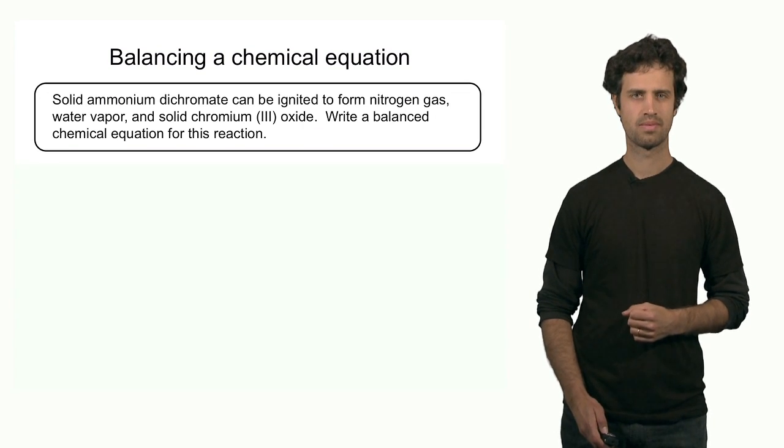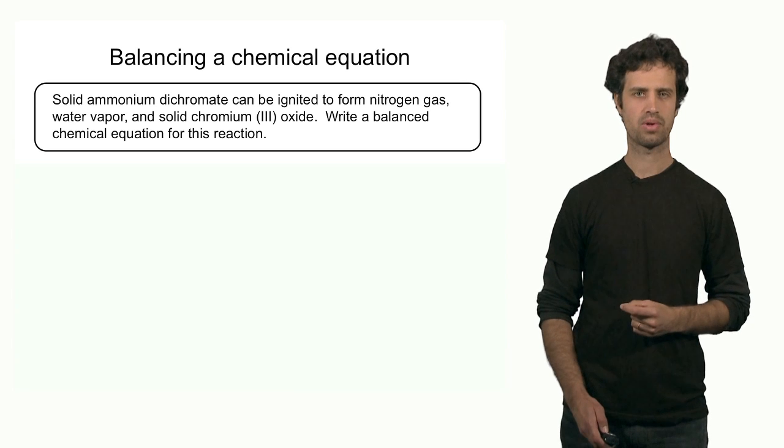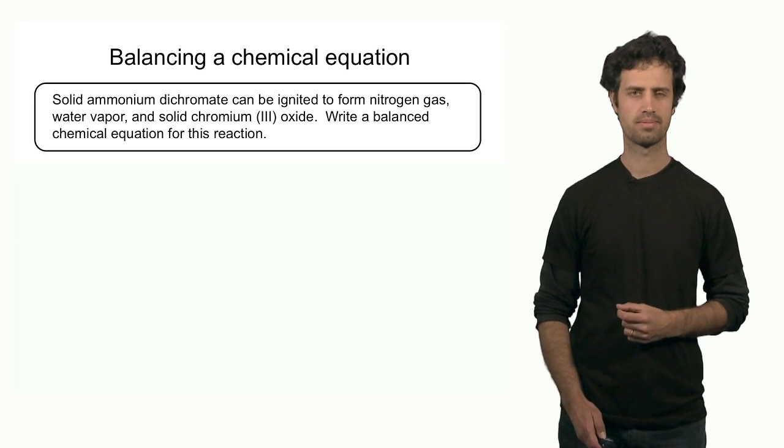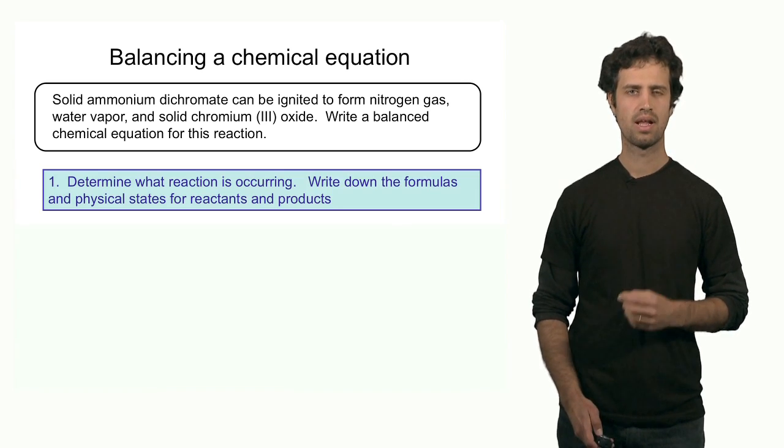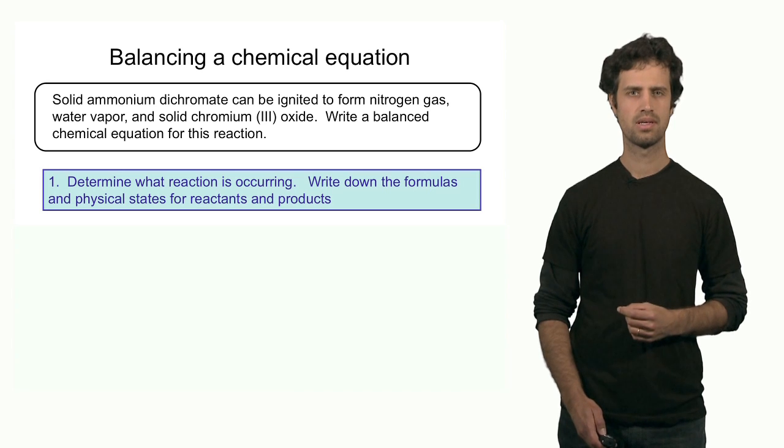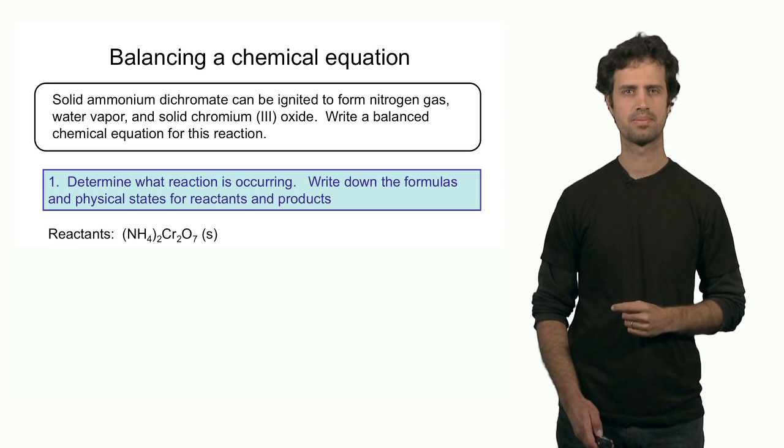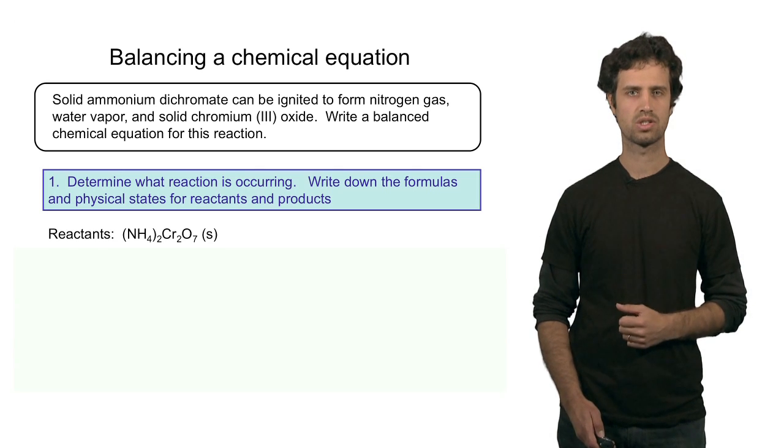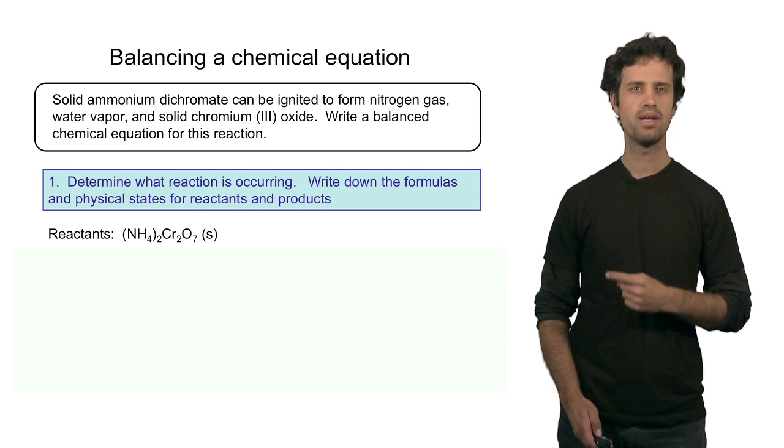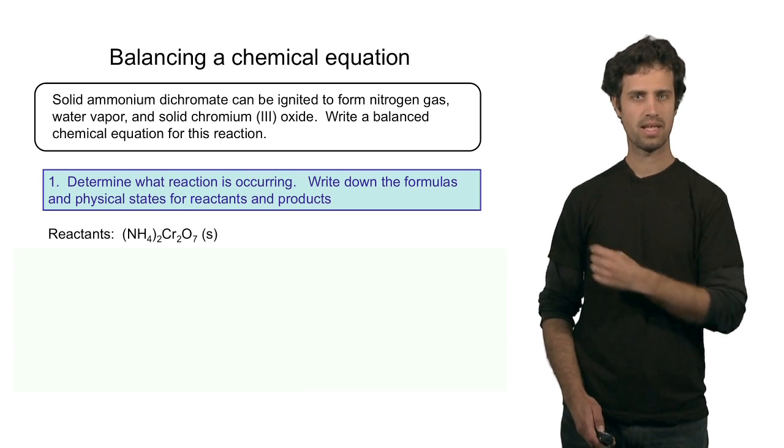Let's look at an example. In this reaction, ammonium dichromate is ignited to form nitrogen gas, water vapor, and chromium oxide. What is the balanced equation for this reaction? First things first. Let's try to identify the reactants and the products. There is only one reactant in this case, and that is ammonium dichromate. Ammonium dichromate is an ionic compound. It contains two cations of ammonium and one anion, the dichromate anion. It is also in a solid state, indicated by this S.